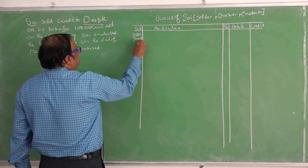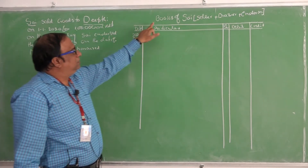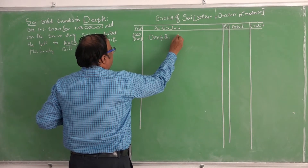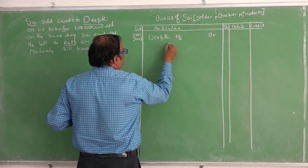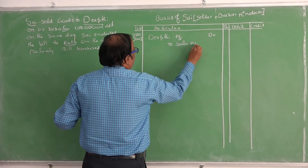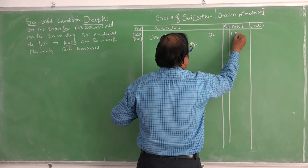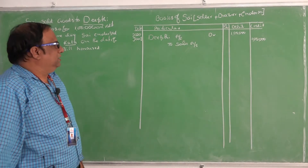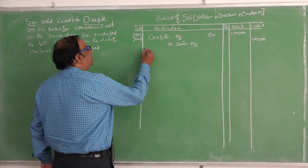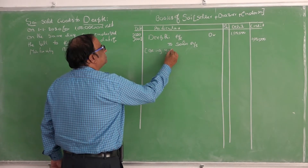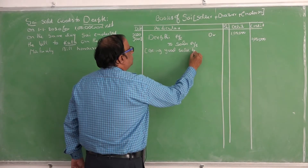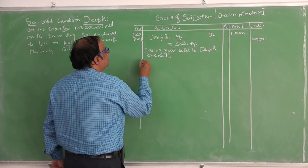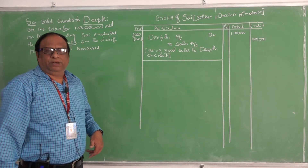2020, January 1st. Saai sold goods to Deepti. We are in the books of Saai, so the first entry: Deepti account debit to sales account, 1 lakh. Being goods sold to Deepti on credit.